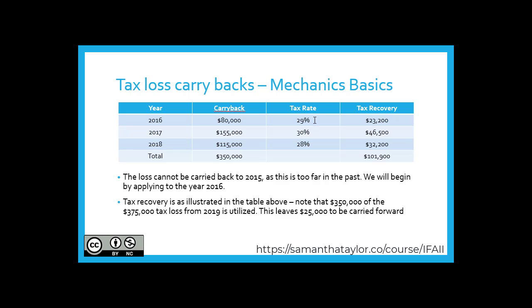We see that in 2016 there's a tax rate of 29%, 30% for 2017, and 28% for 2018. It also shows that taxes were paid in each of those years, so in theory we could generate a tax loss carryback for each one of them.